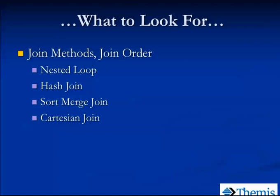How about join methods? If we are doing joins, what type of join did the optimizer choose? There are three major ones the optimizer will choose from. We look at a nested loop, a hash join, a sort merge join, and then the dreaded Cartesian join, which we typically do by accident most of the time and want to avoid.